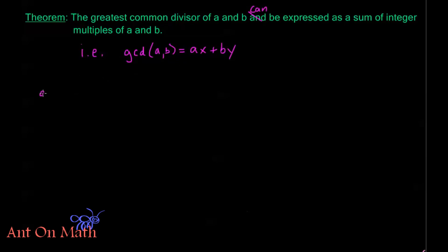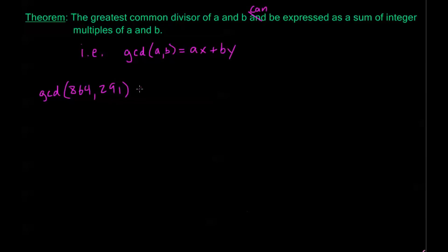Let me use the example we did before: GCD of 864 and 291. Remember that we found this was equal to 3. The way that we found it is what's going to be important, so I'm going to redo this calculation. Recall that 864 equals 2 times 291 and our remainder was 282.